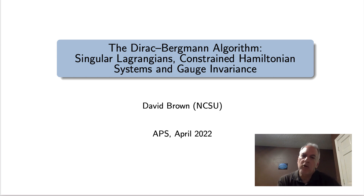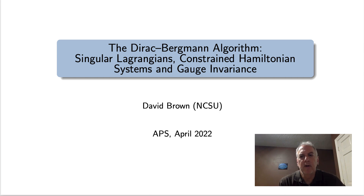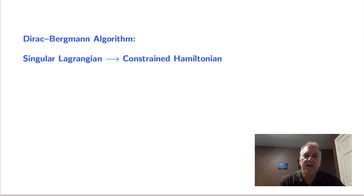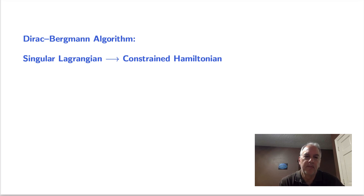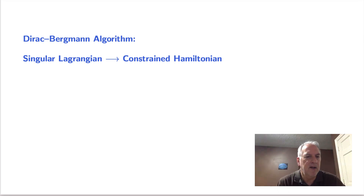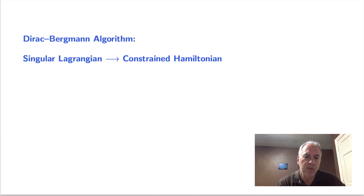Hello everyone. I'm going to talk about the Dirac-Bergman algorithm, which is a recipe for converting a system with a singular Lagrangian into a constrained Hamiltonian system. For those of you who are experts on this subject, you'll notice that I don't have any new insights — I'll just be applying the algorithm as it was understood by Dirac and Bergman and a few others by the end of the 1950s.